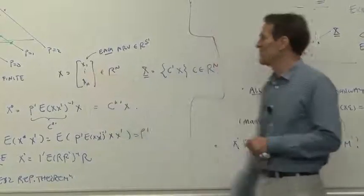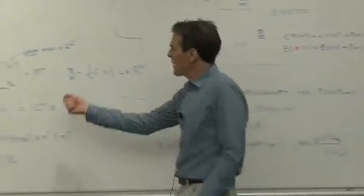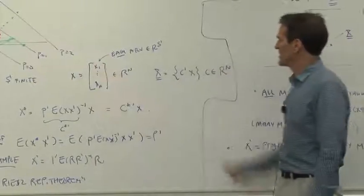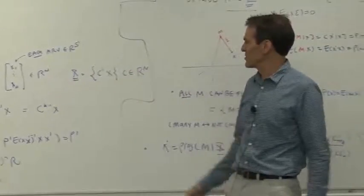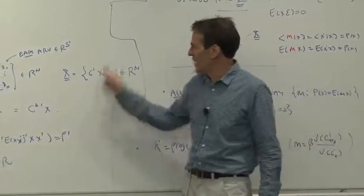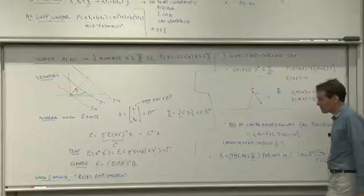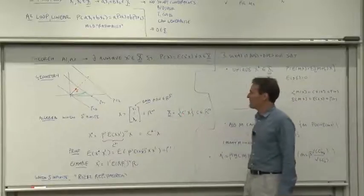If we have that set of securities, then the payoff space is all linear combinations of those securities where the weights are in R^n. So you can weight the securities different amounts. Now what we want to know is, is there a payoff of that form that acts as a discount factor?